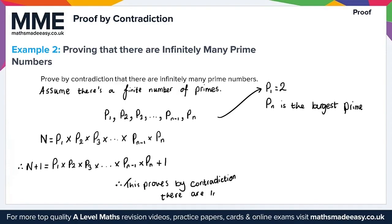So we write this down in full: this proves by contradiction that there are infinitely many primes. And that gives us the solution to example 2.